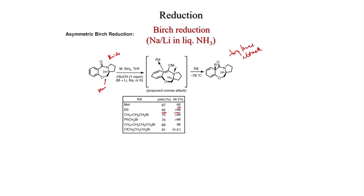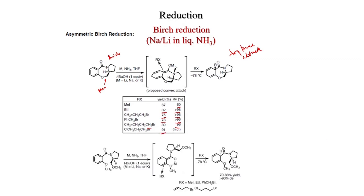With PhCH2 (allyl bromide): 75% yield, greater than 96% selectivity. With ClCH2CH2CH2Br: 91% yield. When the ether moiety is clipped open, treatment with lithium in liquid ammonia still gives a dienolate, but now the CH2Me group on the top face means alkylation takes place from the down side — opposite facial selectivity is observed in the open (acyclic) system versus the cyclic system.